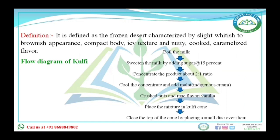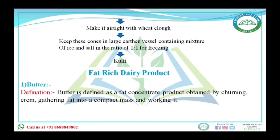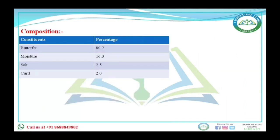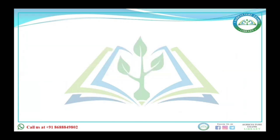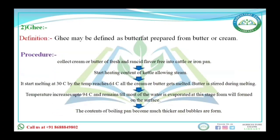Kulfi is a frozen dessert. Butter is a fat-concentrated product obtained by churning cream and gathering the fat into a compact mass. Composition of butter: 80.2% butter fat, 16.3% moisture, 2.5% salt, 2% curd. Ghee is a butter fat prepared from butter or cream.